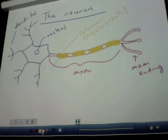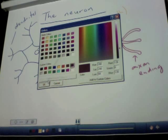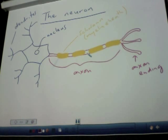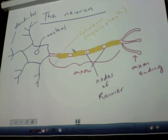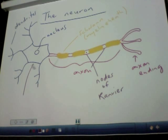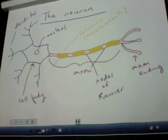In between where the Schwann cells are, there are little spaces called nodes of Ranvier. Ranvier was a scientist who discovered those. The nodes of Ranvier actually speed up the transmission of the nerve impulse because the impulse can jump from one node to the next. And the main part of the neuron is called the cell body, which is also a really important part.